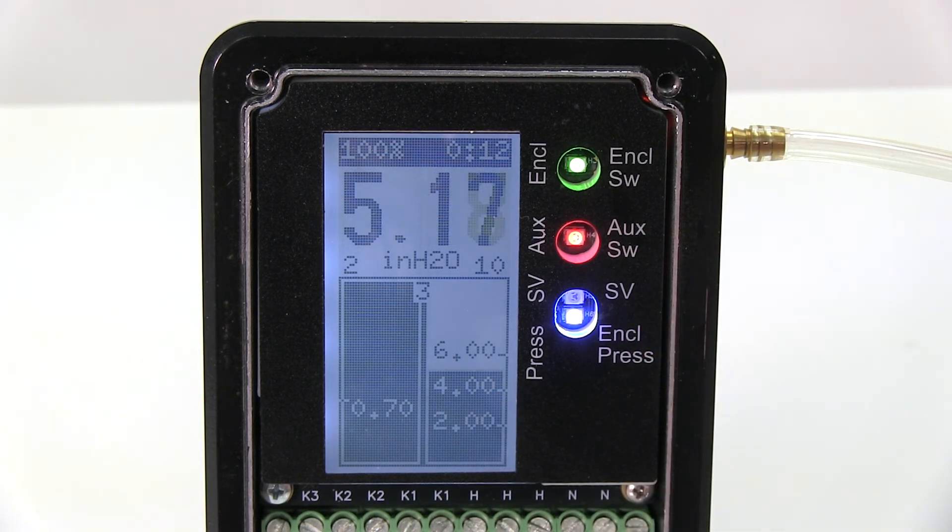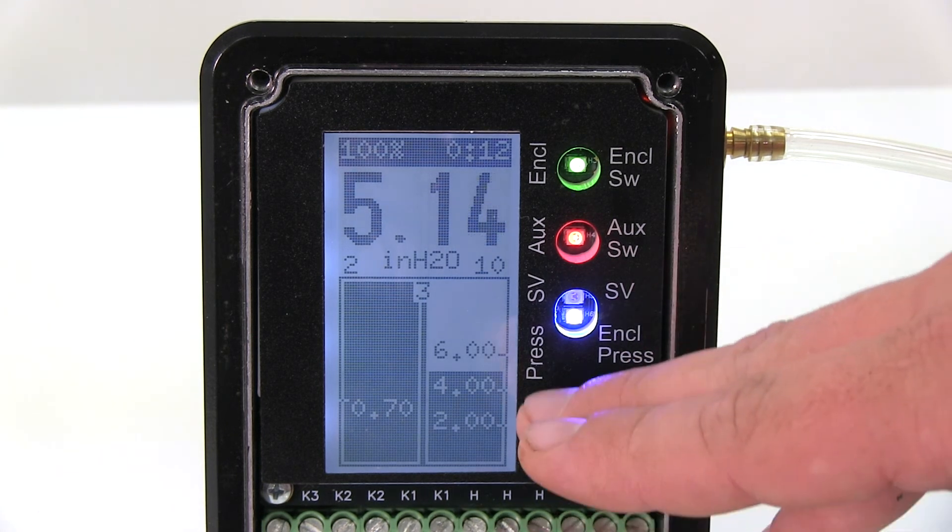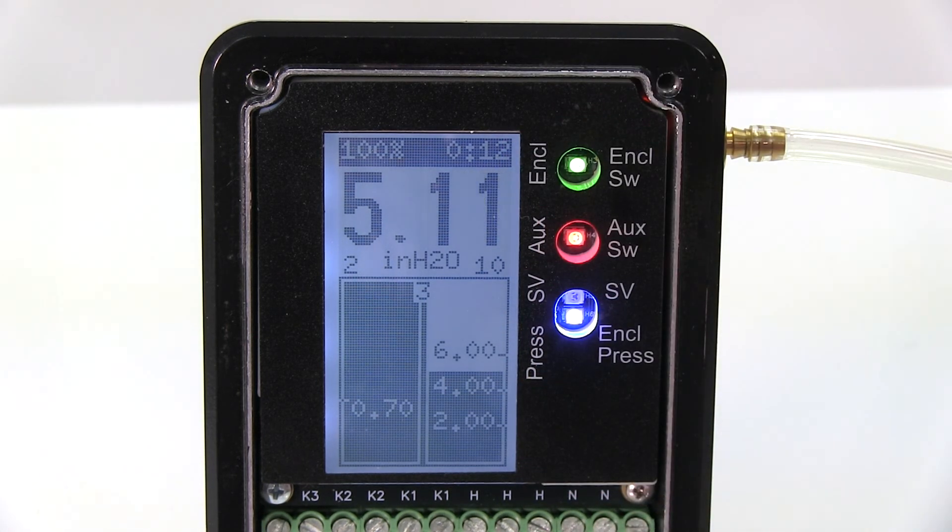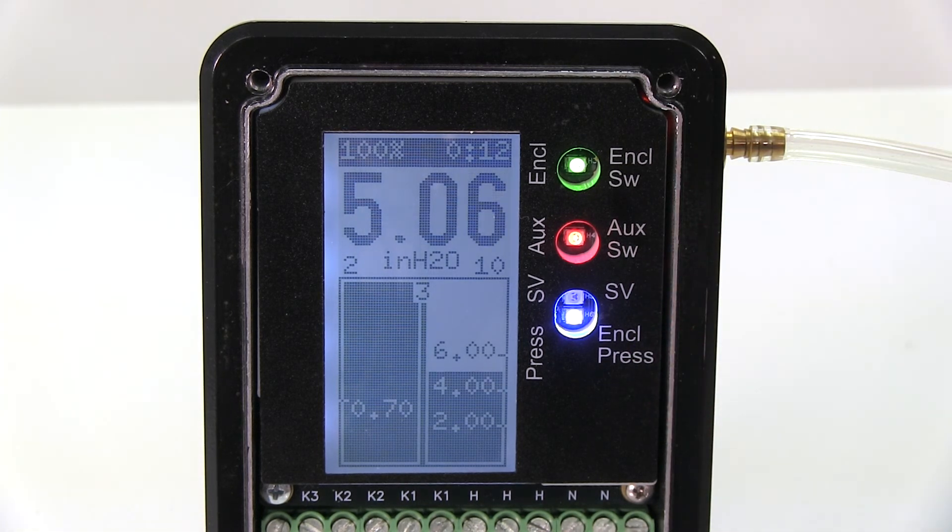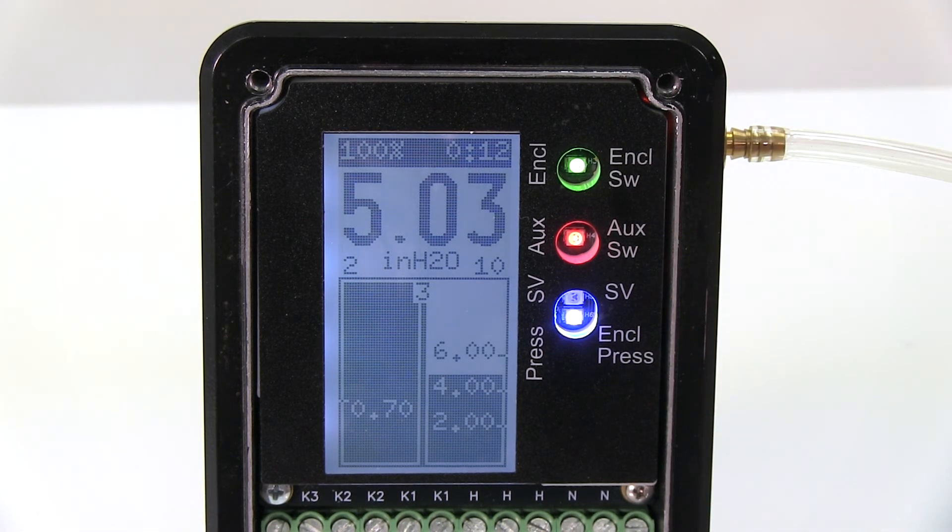It'll turn on the solenoid valve, this amber LED. Then once you get above your purging pressure, your timer will start. And once the timer counts down and the purging cycle is complete, your K1 contact energizes and provides power to your enclosure.